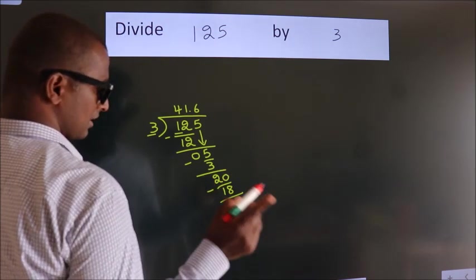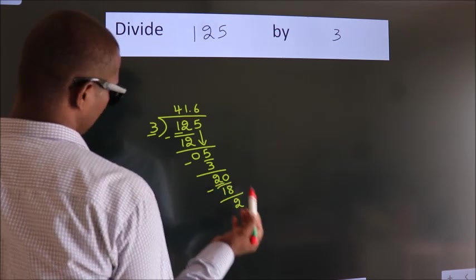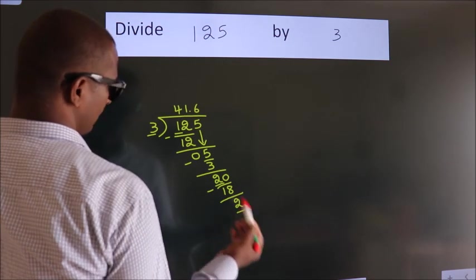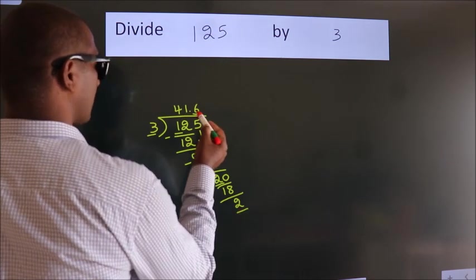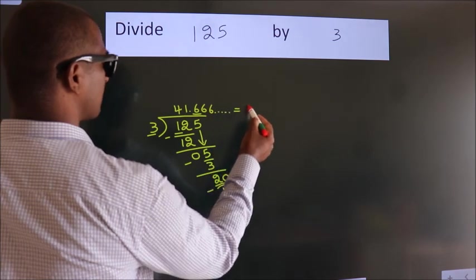Now you observe, we had 2 here and we got 2 again. That means this number keep on repeating. So this is our quotient.